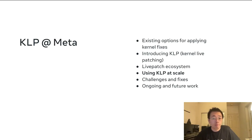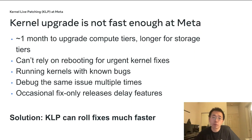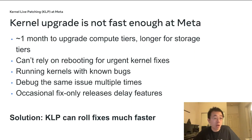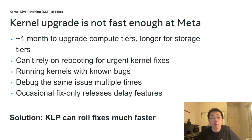How do we use KLP at scale? At Meta, we don't have a problem rebooting a specific system, but we have a problem that kernel upgrades are not fast enough. Typically it takes us a month to upgrade the compute tiers, and potentially much longer for storage tiers. As a result, we cannot rely on rebooting for urgent kernel fixes. This means sometimes we have to run kernels with known bugs, debug the same issue multiple times, and occasionally we have to do a fix-only kernel release just to fix a bug, which delays the actual feature release.